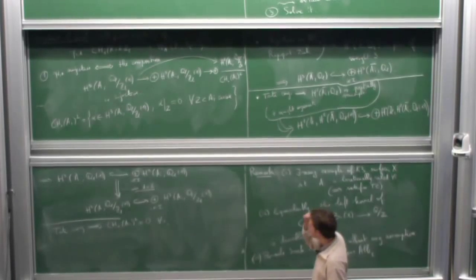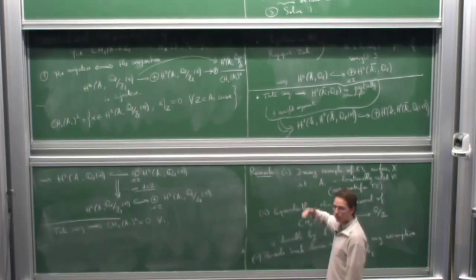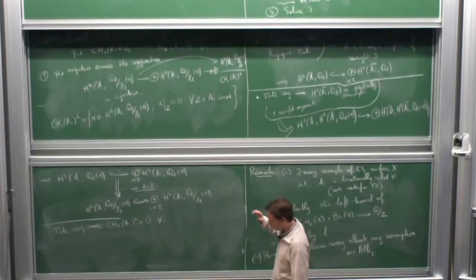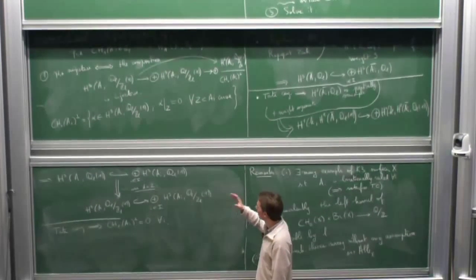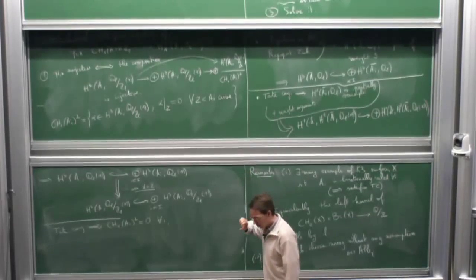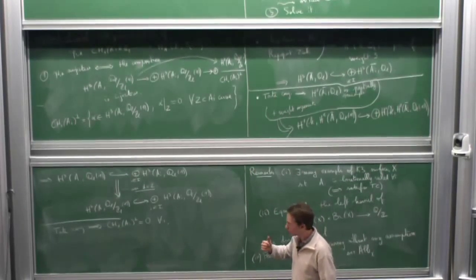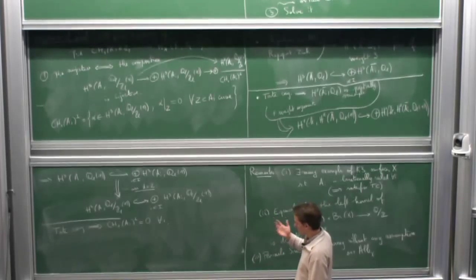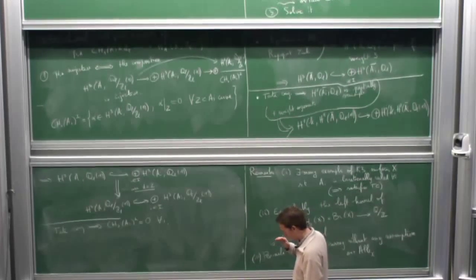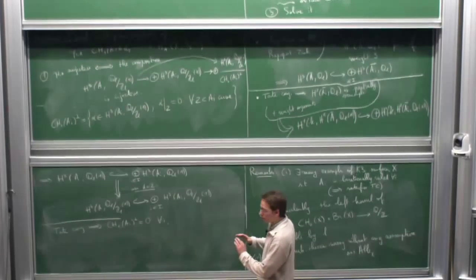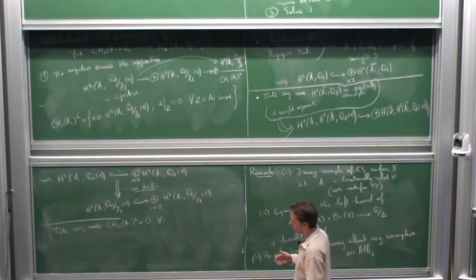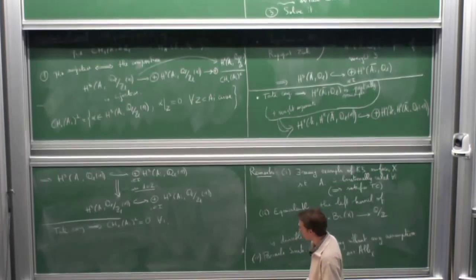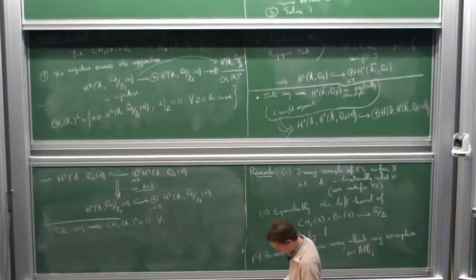In particular, if we had the Kulikov-Persson-Morrison classification in mixed characteristics, we would get injectivity for K3 surfaces over the maximal unramified extension of Q_p. Now, Theorem 2 gives it for free over p-adic fields, assuming the Tate conjecture and existence of models. It's somewhat strange that to prove the same result over the maximal unramified extension, you would need very strong geometric classification results.